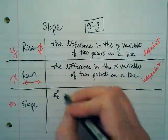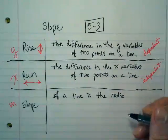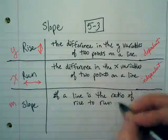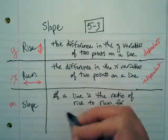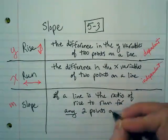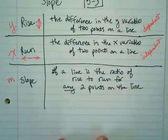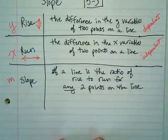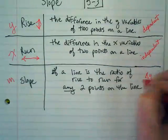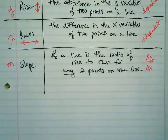The definition of slope of a line is the ratio - that's why we always see these in a fractional type of look - a ratio of rise to run for any two points on a line. So this is a ratio of the change in y over the change in x.